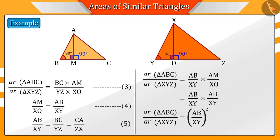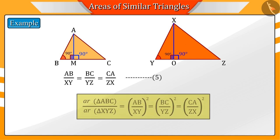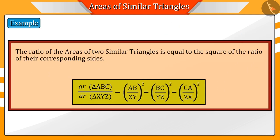So, using equation 5, we get this solution. That is, from the above solution, we can say that the ratio of the areas of two similar triangles is equal to the square of the ratio of their corresponding sides.